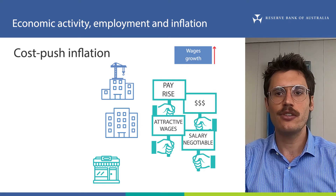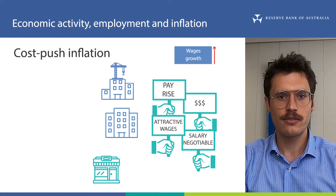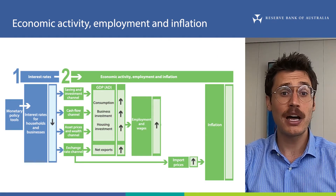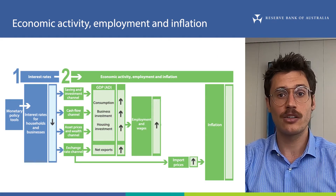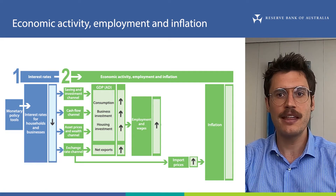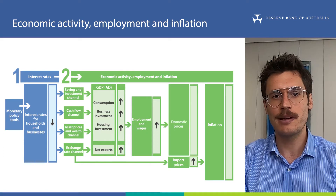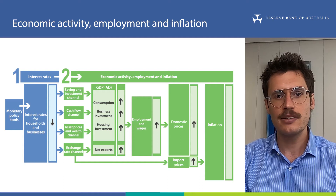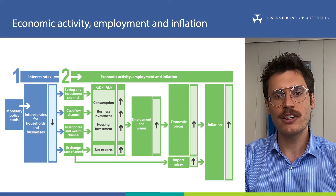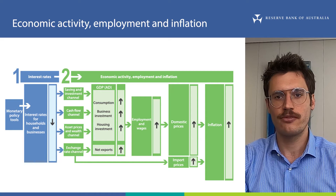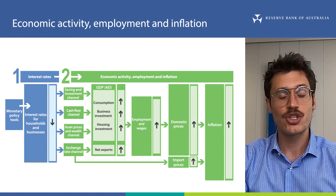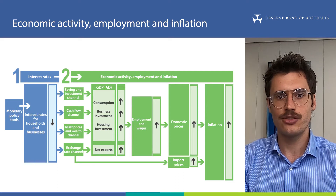Faster wages growth increases the cost of production for businesses by more than otherwise. Businesses may wish to pass on some of these costs to households, other businesses and governments that demand their goods and services by raising their prices. This will increase inflation. This type of inflation is called cost push inflation. So that's one example of transmission from a change in aggregate demand to inflation.